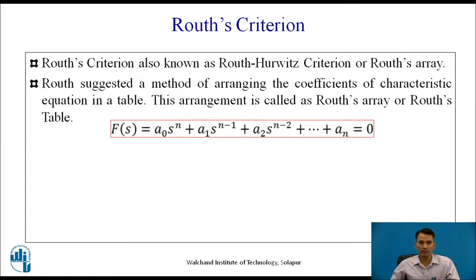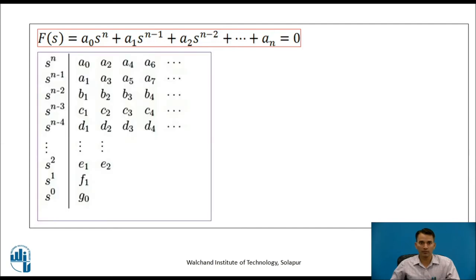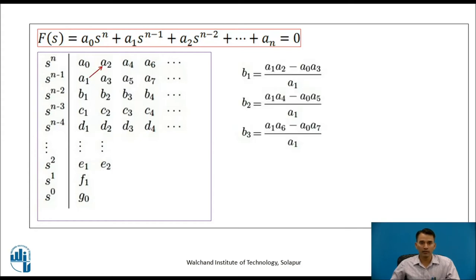Let us write Routh's Array or Routh's table. For a particular characteristic equation, the Routh's table is written as: for the first row s^n, the coefficients are a0, a2, a4, a6; for the second row s^(n-1), the coefficients are a1, a3, a5, a7. For the next row, b1, b2, b3, b4 are calculated: b1 = (a1·a2 - a0·a3)/a1, b2 = (a1·a4 - a0·a5)/a1, b3 = (a1·a6 - a0·a7)/a1.